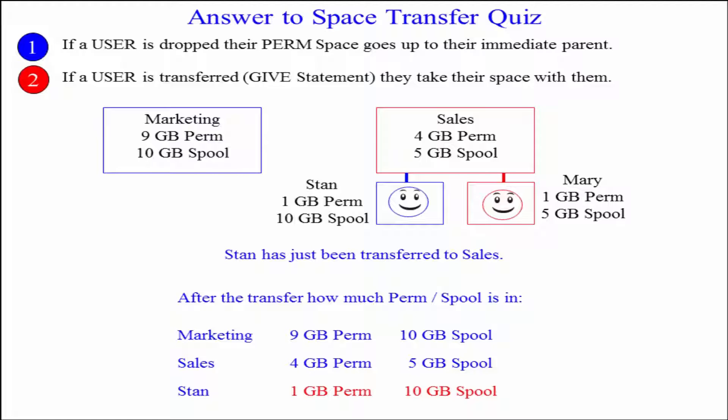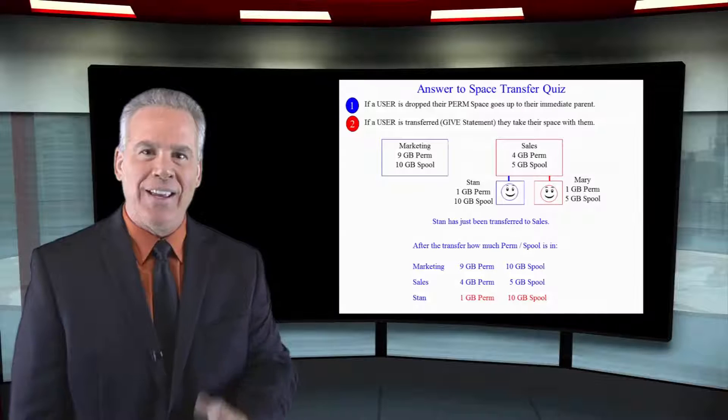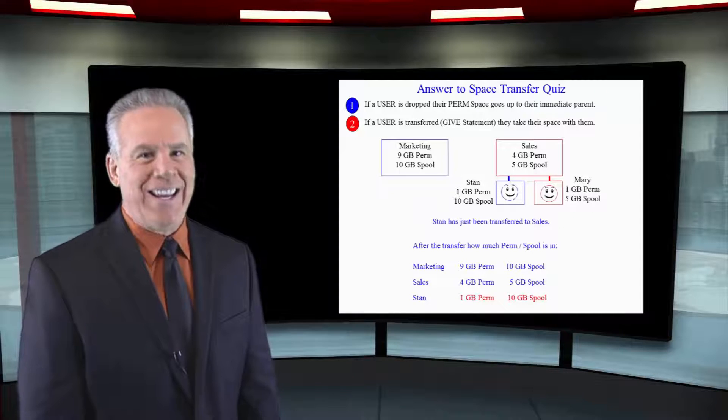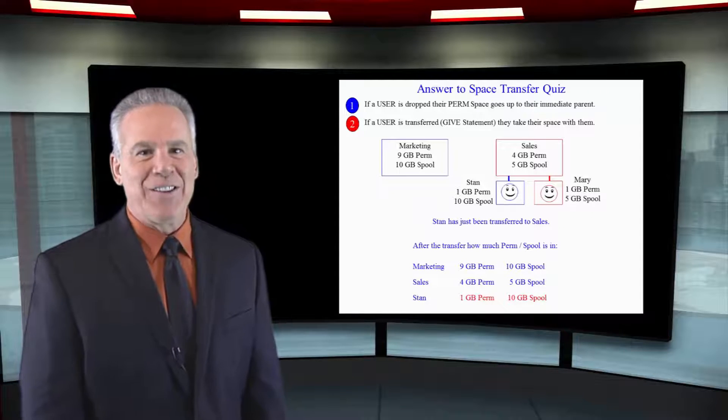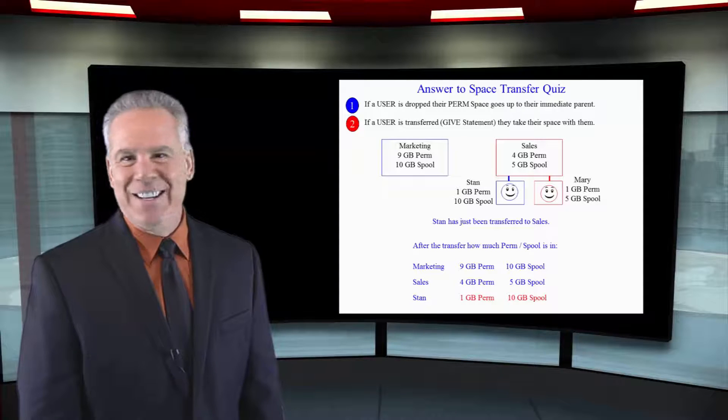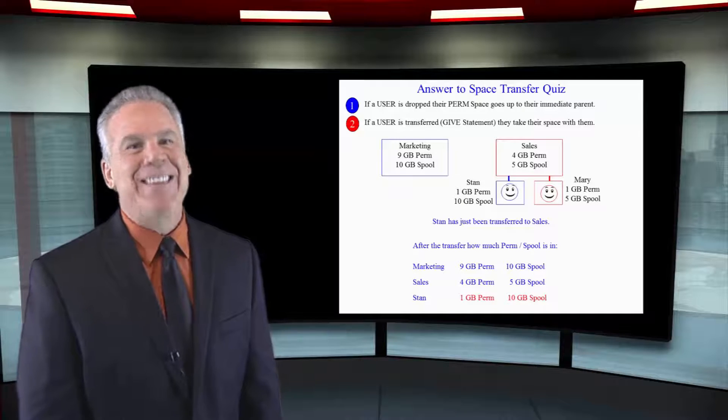The only time you can have more spool than your parent is if you were given away. If you followed your rules to the T, you've got this right. If not, you're part of the 95% that missed this.